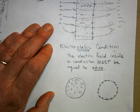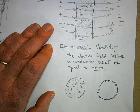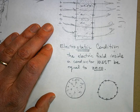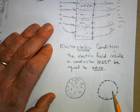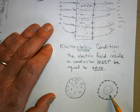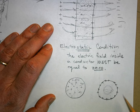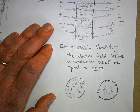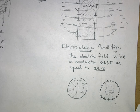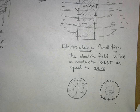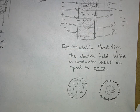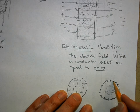The implications: if I draw a Gaussian surface inside the conductor using Gauss's law, there's no charge inside there, so there's no electric field. From the outside, the charge distribution looks like a point charge. Now I want to talk about one more thing — what is the electric field just outside the surface of a conductor?